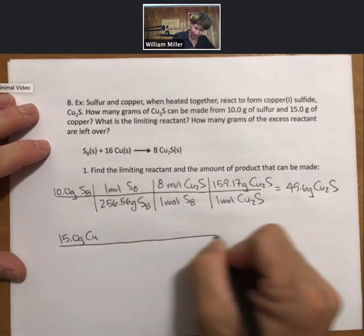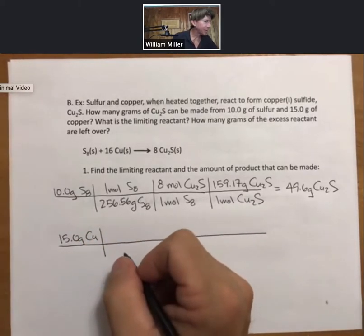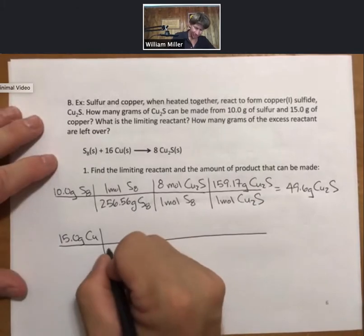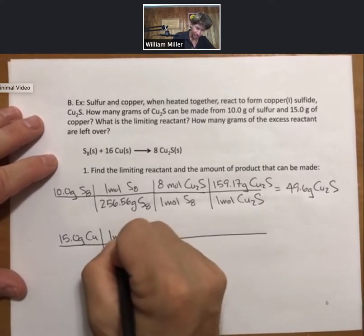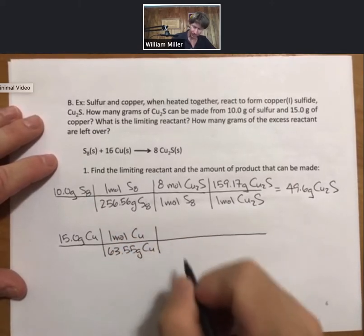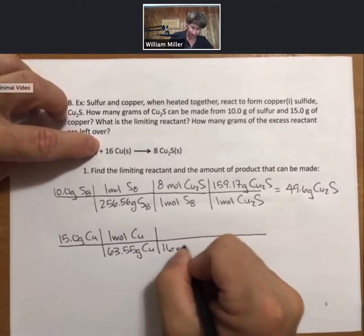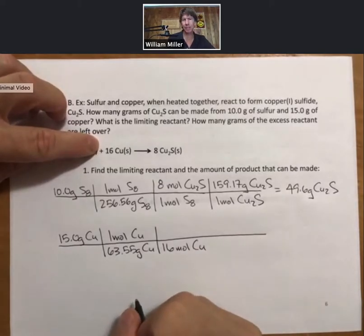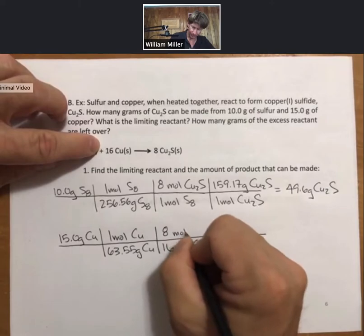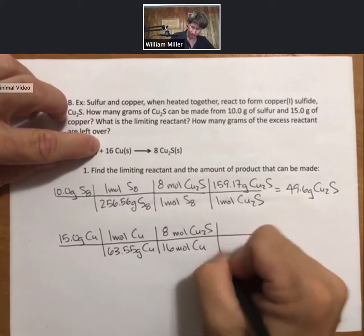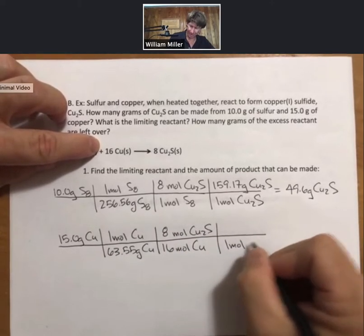Now let's start with the copper. Copper from the periodic table, 63.55 grams per mole. And this time 16 moles of copper are necessary to make 8 moles of copper 1 sulfide. And the last step is the same in my approach.